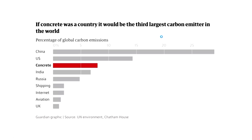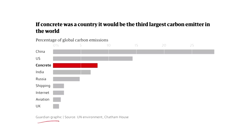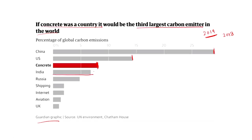We looked at construction and manufacturing as a major contributing factor to greenhouse gas emissions. From the Guardian: if concrete were a country, it would be the third largest carbon emitter in the world. Looking at percentage of global carbon emissions in 2019 — China at 30%, US around 15% — and concrete's worldwide usage released more carbon dioxide than India's entire national contribution. That is something to keep in mind.